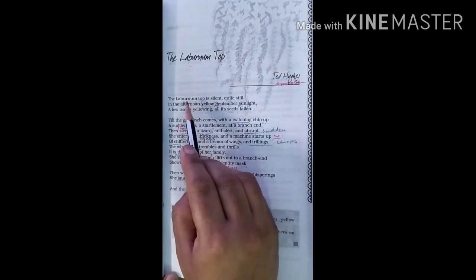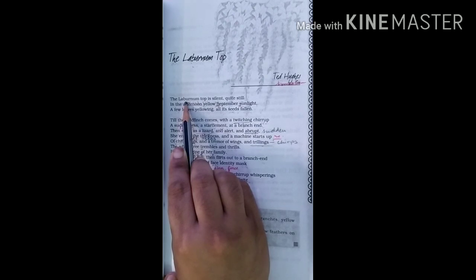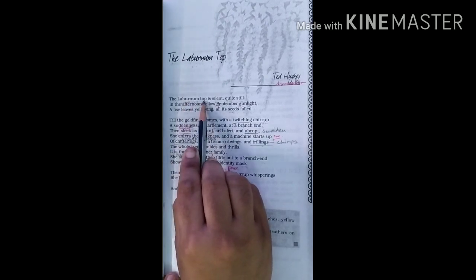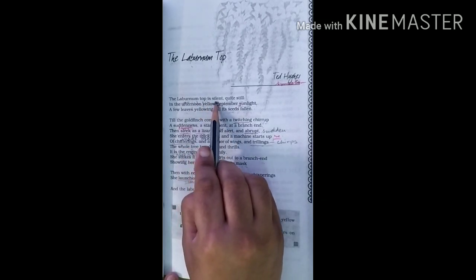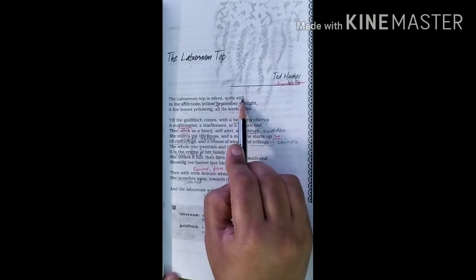See the word meanings first. Laburnum here means a small tree with hanging branches of yellow flowers and poisonous seeds. Top means the top of the Laburnum tree. Silent means mute. Quiet means fully. Still means stable.